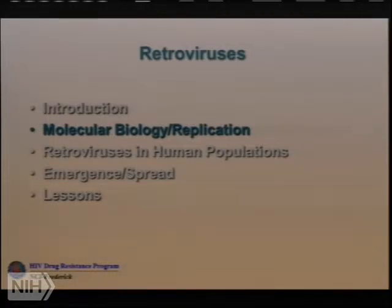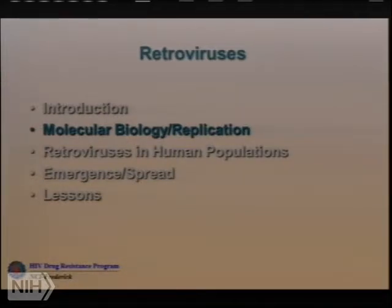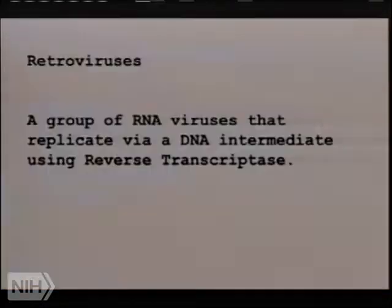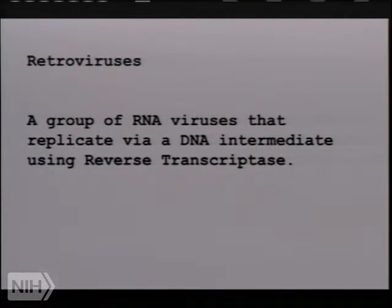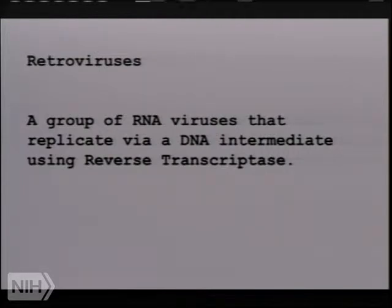Those are the two big problems we have for this planet. I'd like to discuss them in terms of the NIH approach, which is one cell at a time. If we wanted to understand what a retrovirus really was and how it got its name — it's not from the 1970s polyester era, but really a group of RNA viruses that replicate via a DNA intermediate using reverse transcriptase.